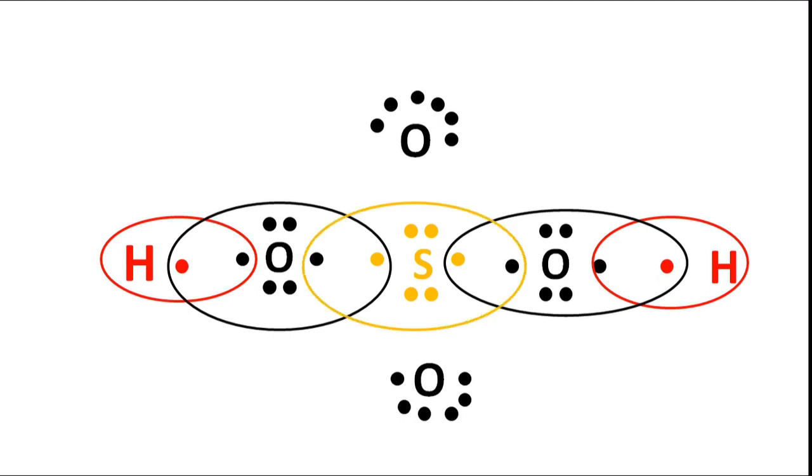Similarly, sulfur shares 1 electron with each oxygen to form simple covalent bonds. The 2 oxygen atoms found in the sulfuric acid molecule form one-sided sharing, which is known as a coordinate bond.